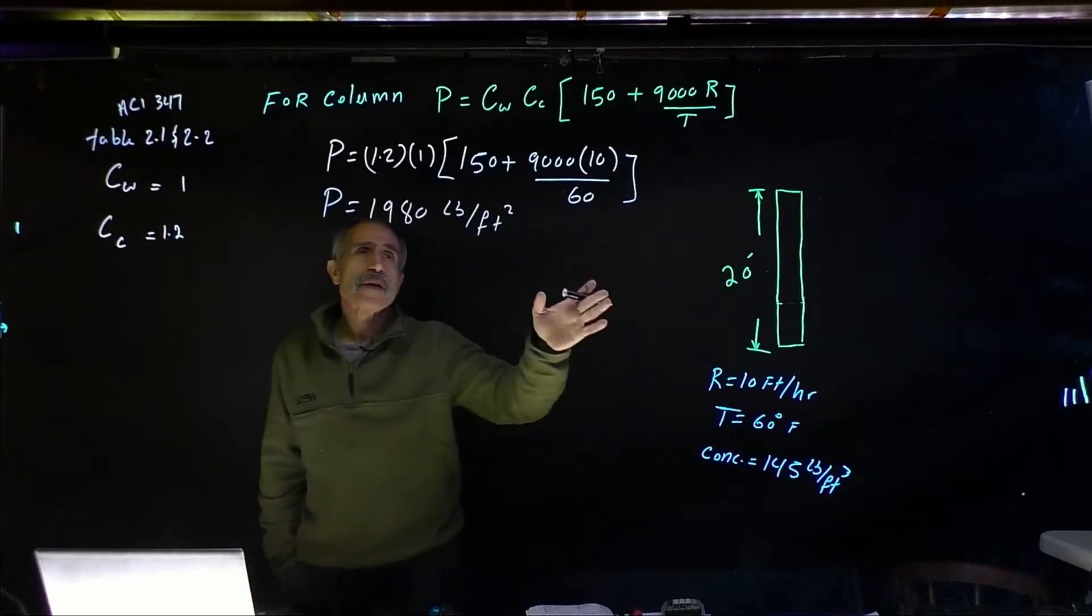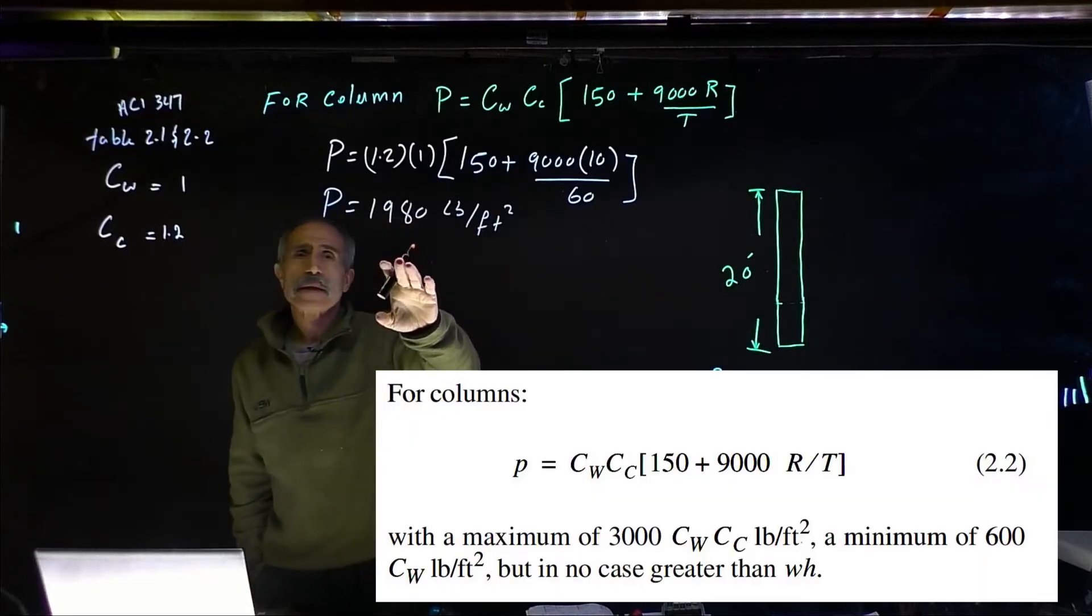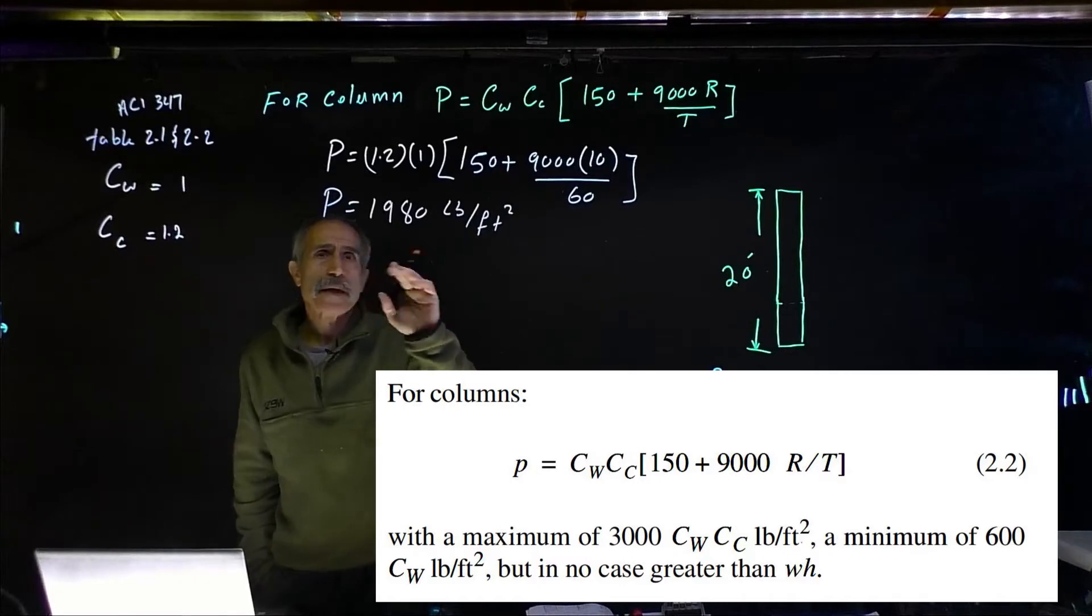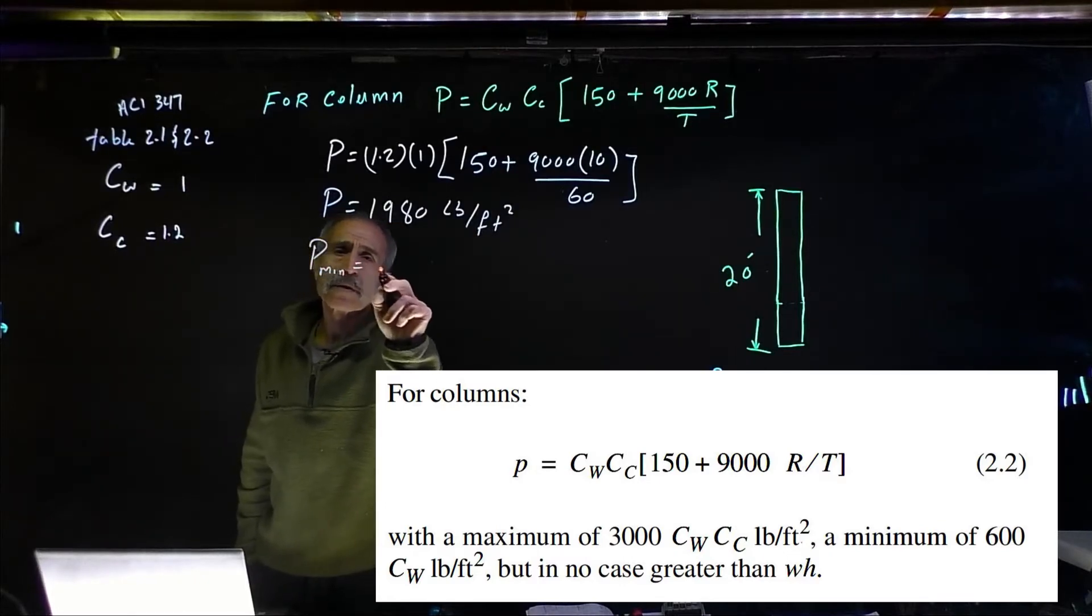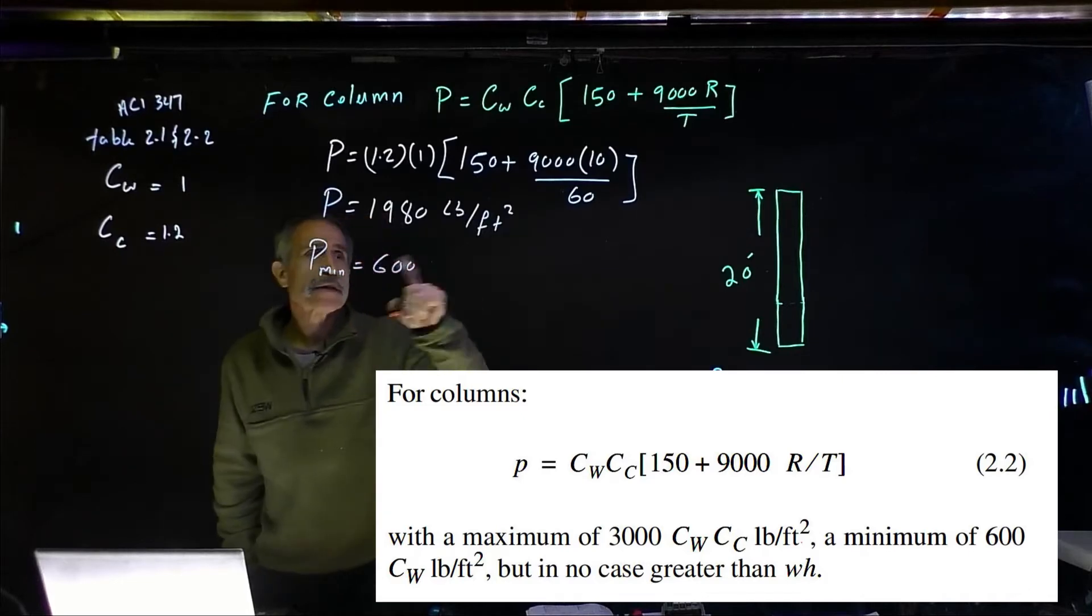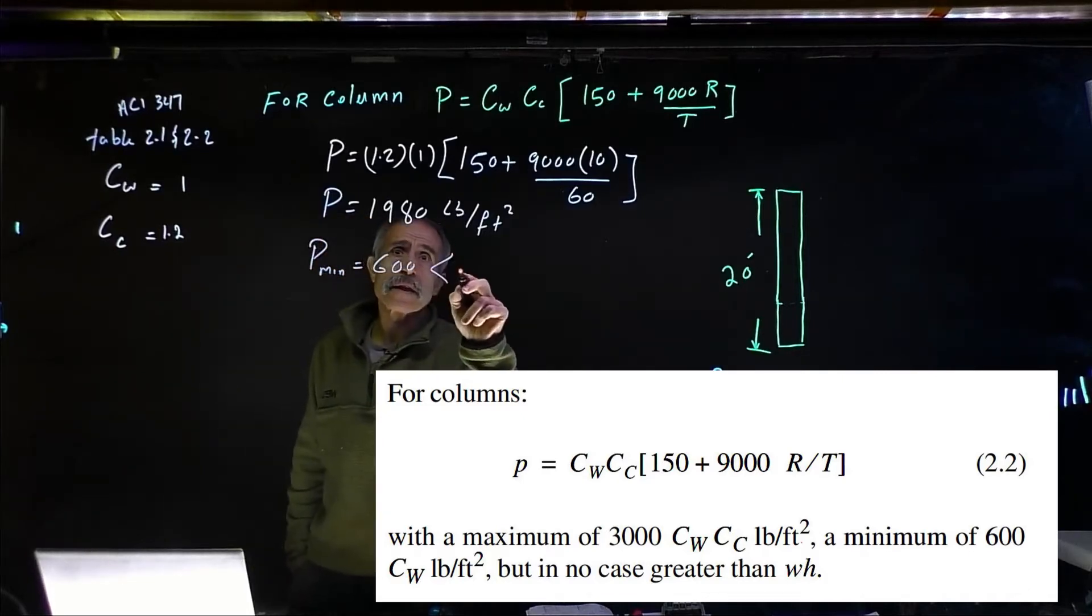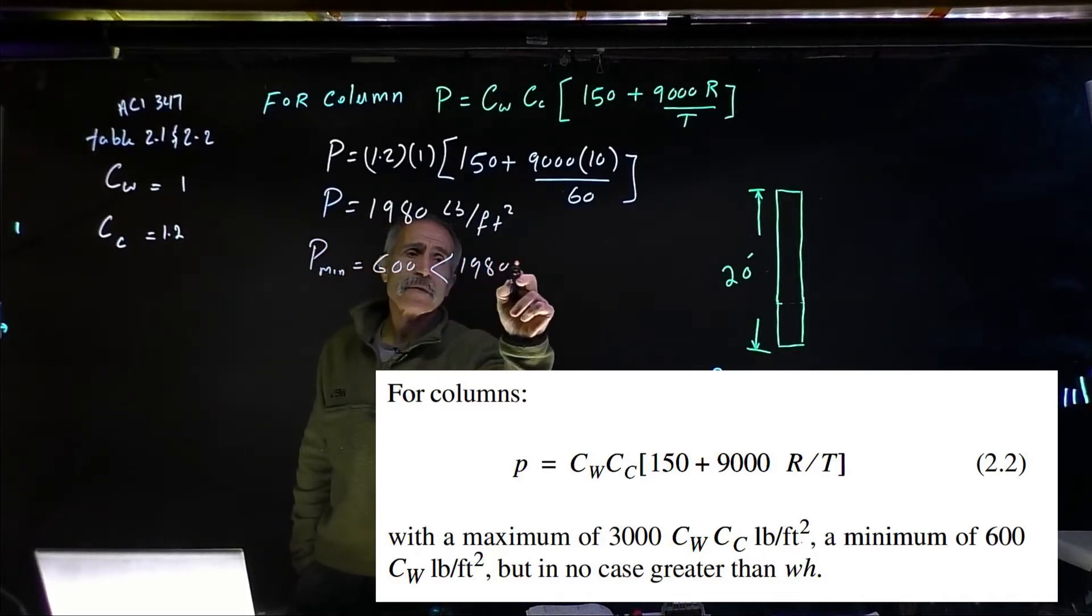Now based on the code this has to be more than the minimum, and the minimum pressure is equal to 600. So that is more than minimum which is less than 1,980, we check out.